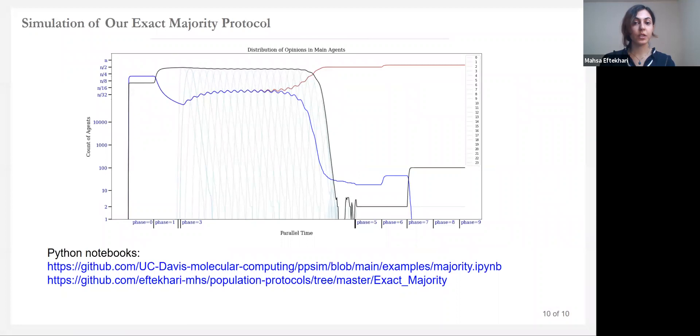Our entire majority protocol takes log n time using log n states and converges to the majority with probability 1 correctness. In case the initial difference between agents in state a and b is zero, the protocol correctly reports tie.